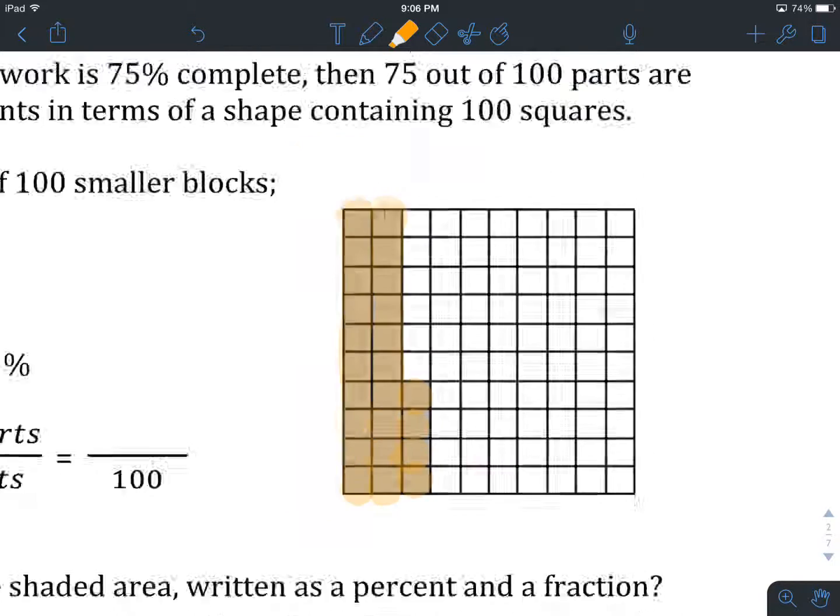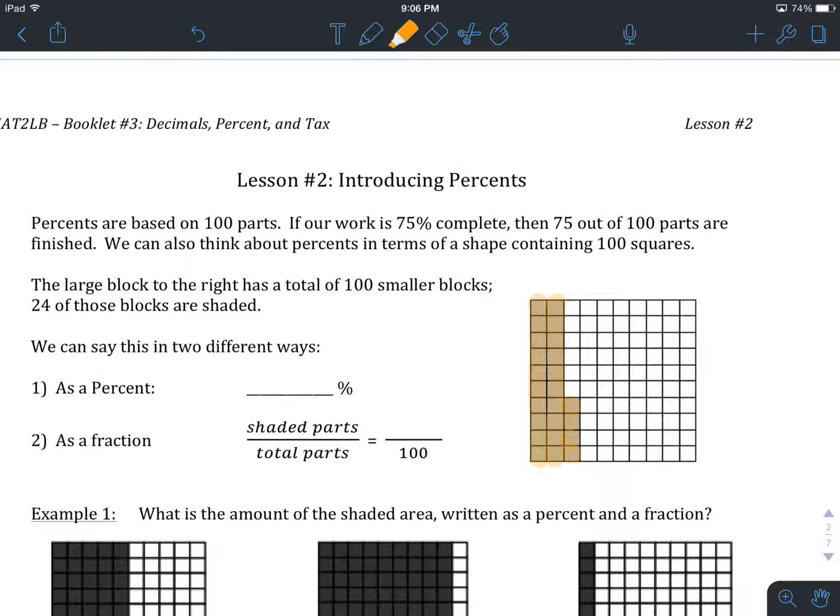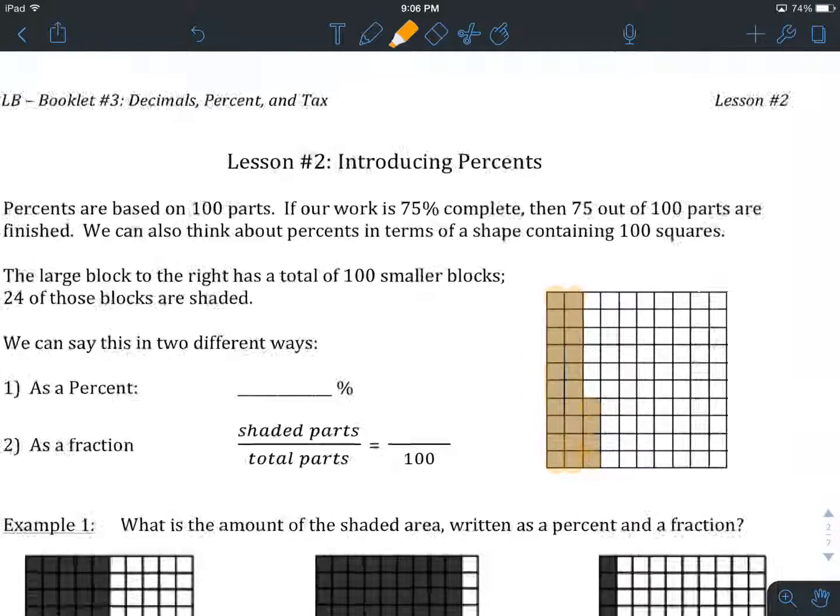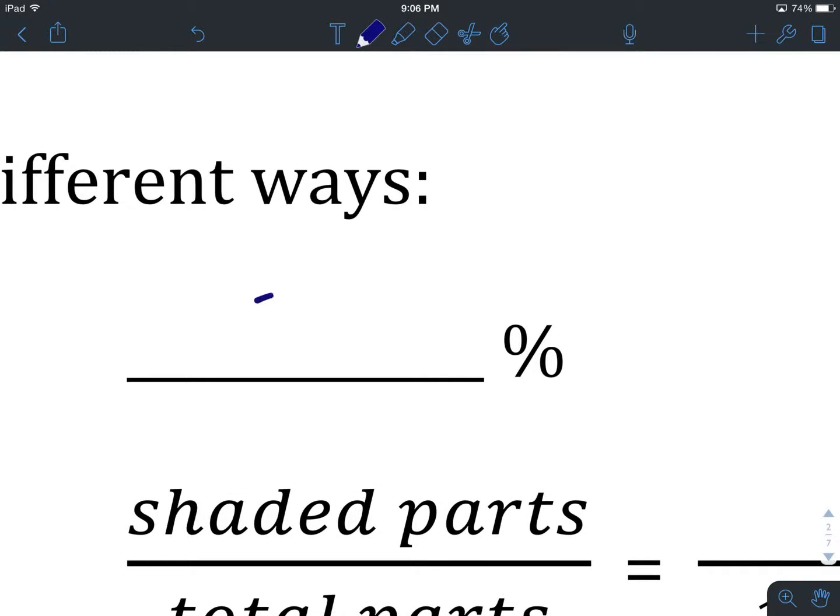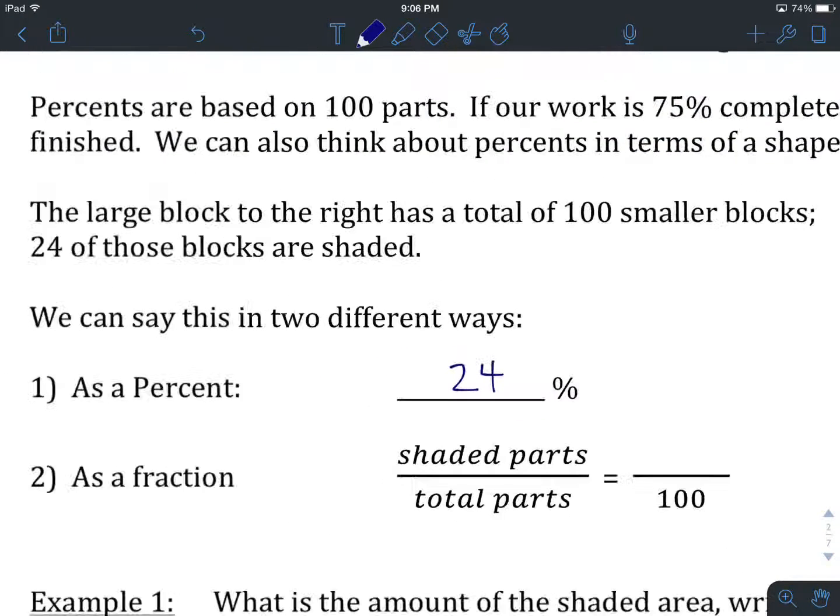So how do we go about expressing percents? The first way is really straightforward. You'll notice that little sign right there with those two little zeros and a slash through them. That is a percentage sign. If we were going to write out 24%, that would be the place to do it. We would write that as 24%.